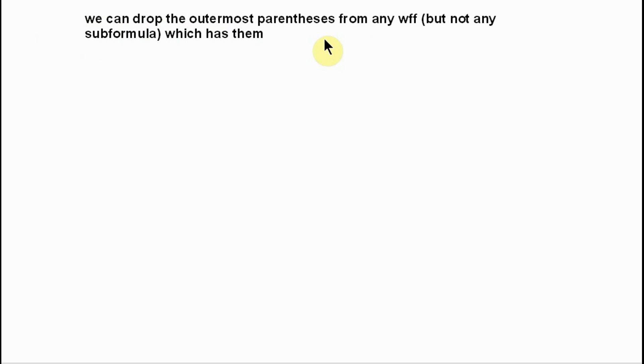Here we come to some rules for omitting parentheses — omitting them in such a way that we don't incur any liability to ambiguity. The first rule for dropping parentheses is that we can drop the outermost parentheses from any wff, but not from any subformula. A subformula is a wff that stands within a wff — for example, the alpha and the beta in a wff such as open parenthesis, alpha arrow beta, closed parenthesis.